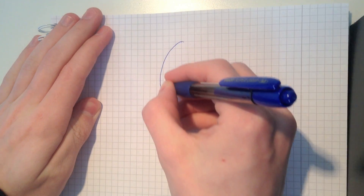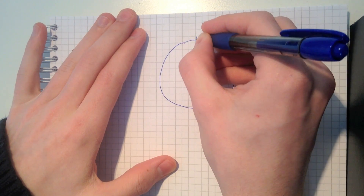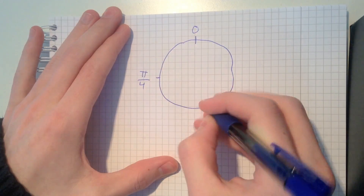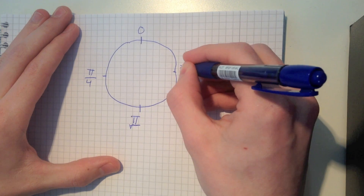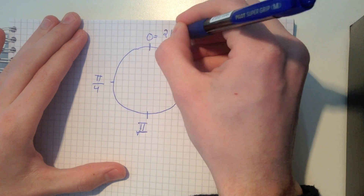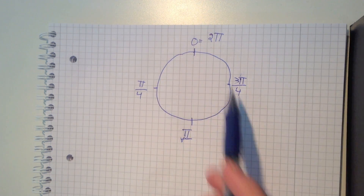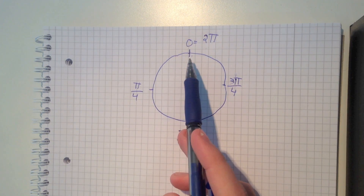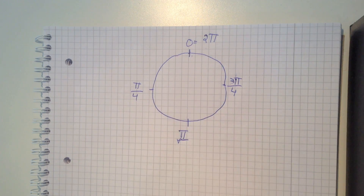So you start by drawing the Earth. You call this position 0, this position π/2, this position π, this position 3π/2, and this position — which is the same as 0 — is 2π. So 0 and 2π are the same position because it's the exact same point on the circle after one full turn. And sin(0) equals sin(2π), and cos(0) equals cos(2π).